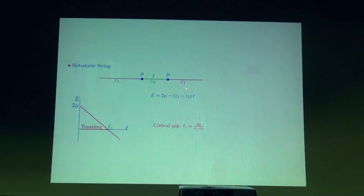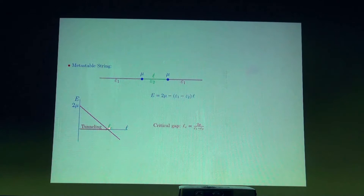When the gap between the ends has length L, the energy is 2 mu minus the energy gain, that's (epsilon_1 minus epsilon_2) times the length of the gap. If we plot the energy as a function of the gap length, it starts at 2 mu when there is no gap, then falls down linearly, heading to zero at length 2 mu over (epsilon_1 minus epsilon_2). In order to break, the stream must undergo tunneling under the barrier.